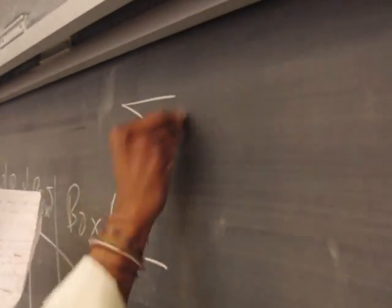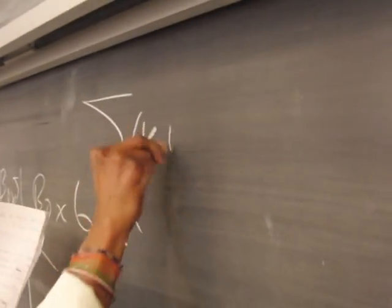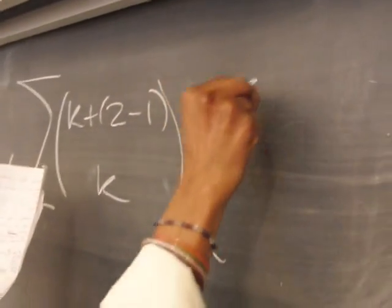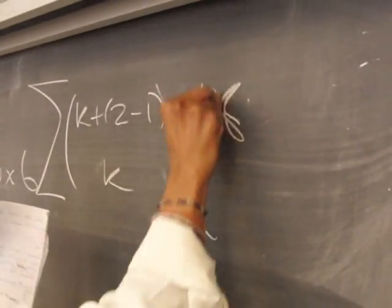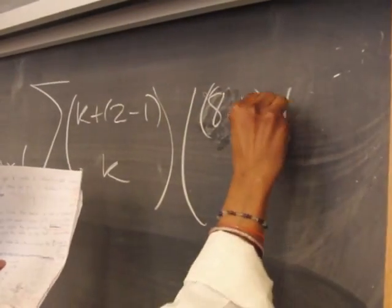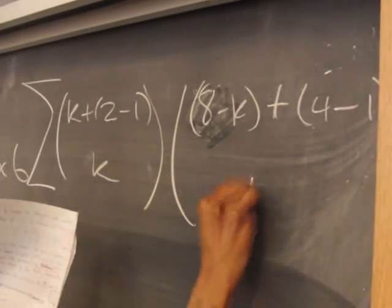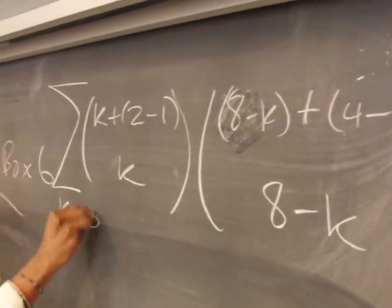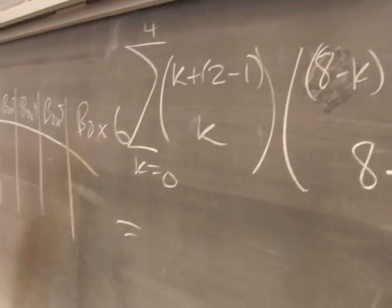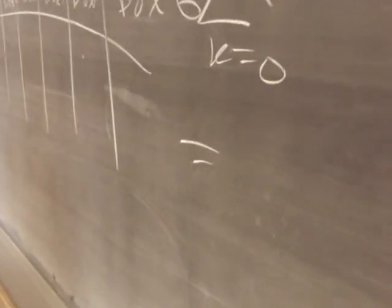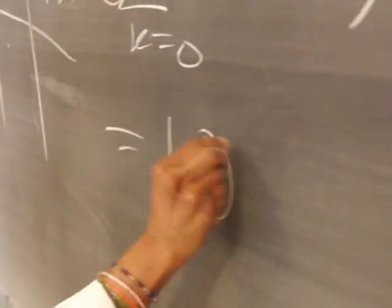We get a final answer like this: the sum over k from zero to four of C(8 - k + 3, 8 - k). The final answer is 1,056.